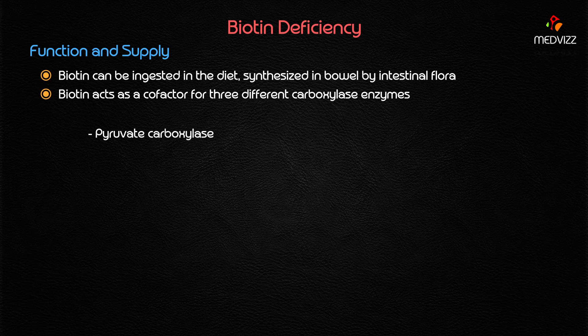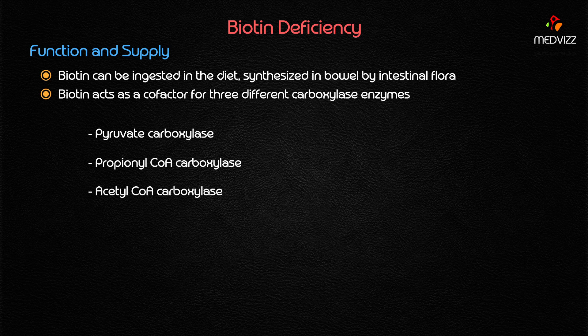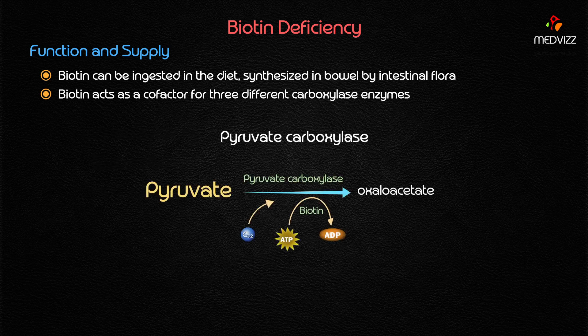The key carboxylase enzymes dependent on biotin are: pyruvate carboxylase, propionyl-CoA carboxylase, and acetyl-CoA carboxylase. Pyruvate carboxylase is the rate-limiting step of gluconeogenesis, where pyruvate is converted into oxaloacetate. This step is dependent on biotin.